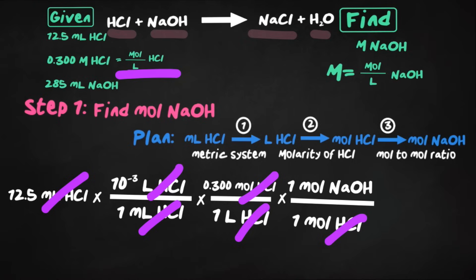Make sure to multiply straight across and divide, really in this case it's just divided by one, and our answer would be 0.00375 moles of NaOH.